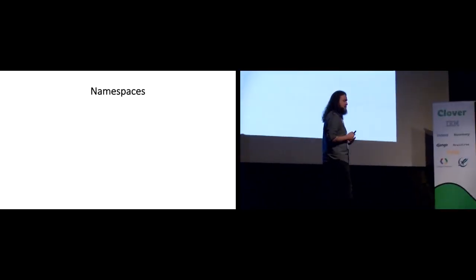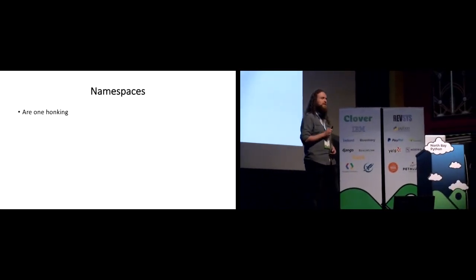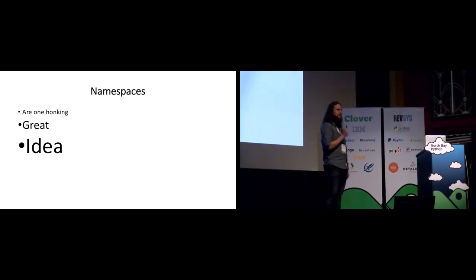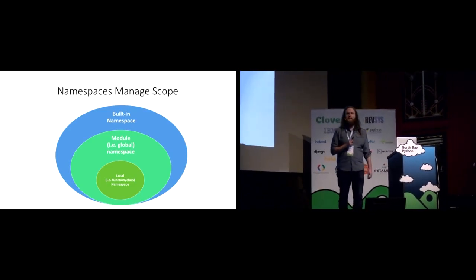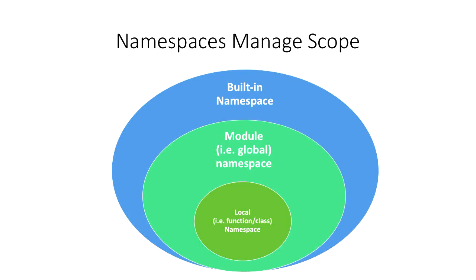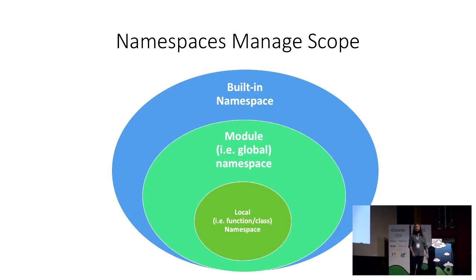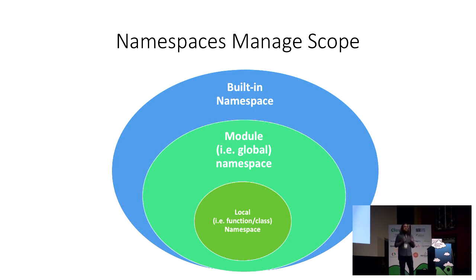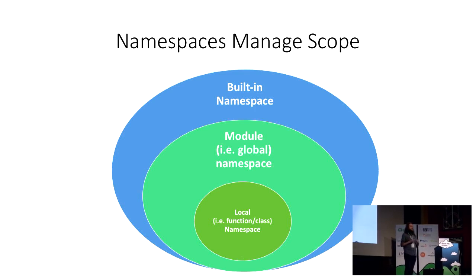Let me take a second to talk about namespaces, because as the Zen of Python teaches us: namespaces are one honking great idea, and we should do more of them. Namespaces are how Python manages scope. Anytime you reference a variable in Python, the interpreter has to figure out what you're talking about, and it does that with the help of namespaces. In this context they're pretty much just a dictionary containing the names and values of any variables defined and accessible at a particular point in your program.